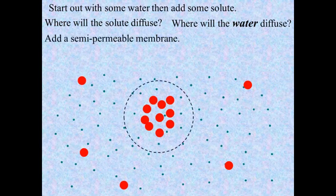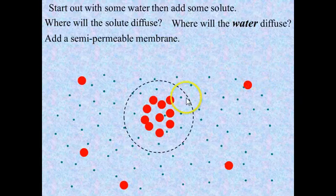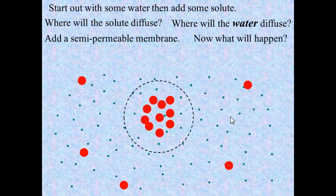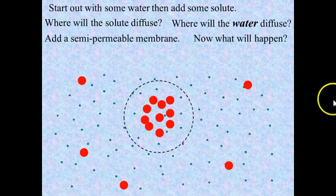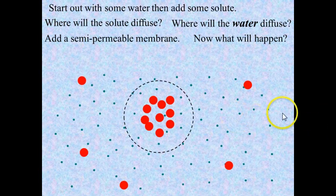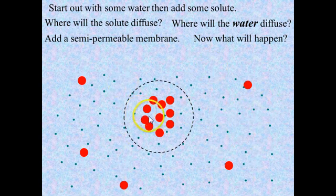Now, to make this more interesting, we're going to add a semi-permeable membrane. So what we have essentially is a cell — a high concentration of solute surrounded by a semi-permeable membrane. Can the solute diffuse out? No, it can't get across the semi-permeable membrane; the solute is stuck inside the cell. So what's going to happen to the water? Because there's a higher concentration of water outside of the cell, it will diffuse across the semi-permeable membrane into the cell.